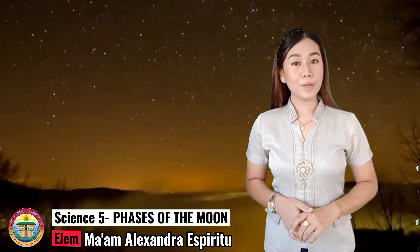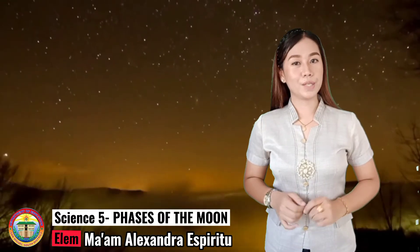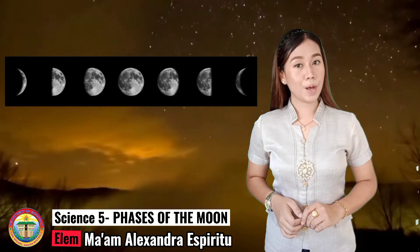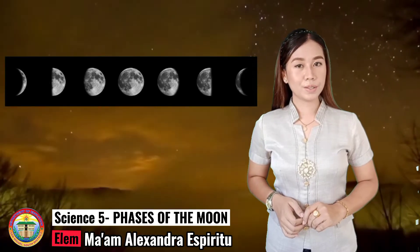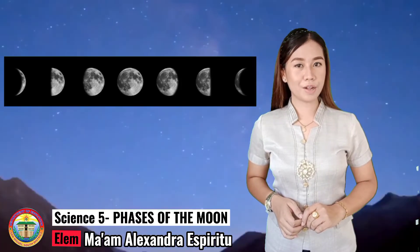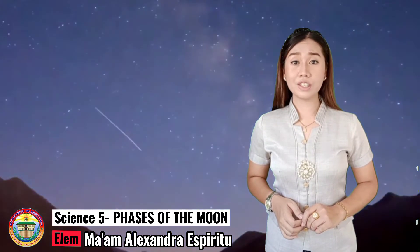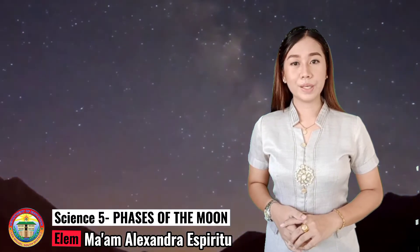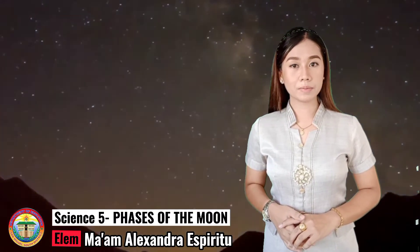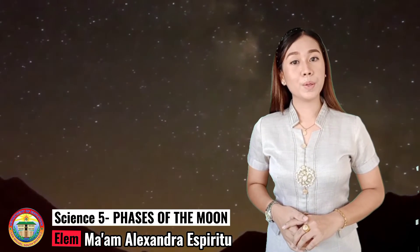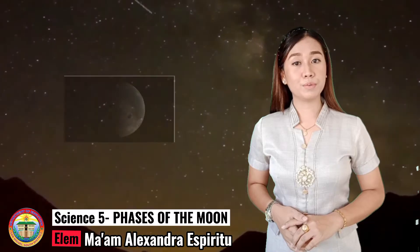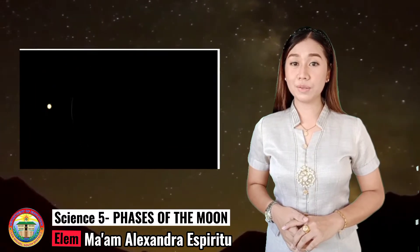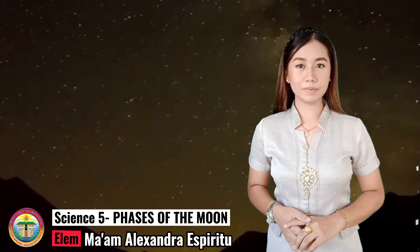As we observe the Moon, it seems to change shape every day. However, the Moon itself does not actually change shape. It only appears to change shape because the part of the Moon that you see is the only part of the Moon illuminated by the Sun.